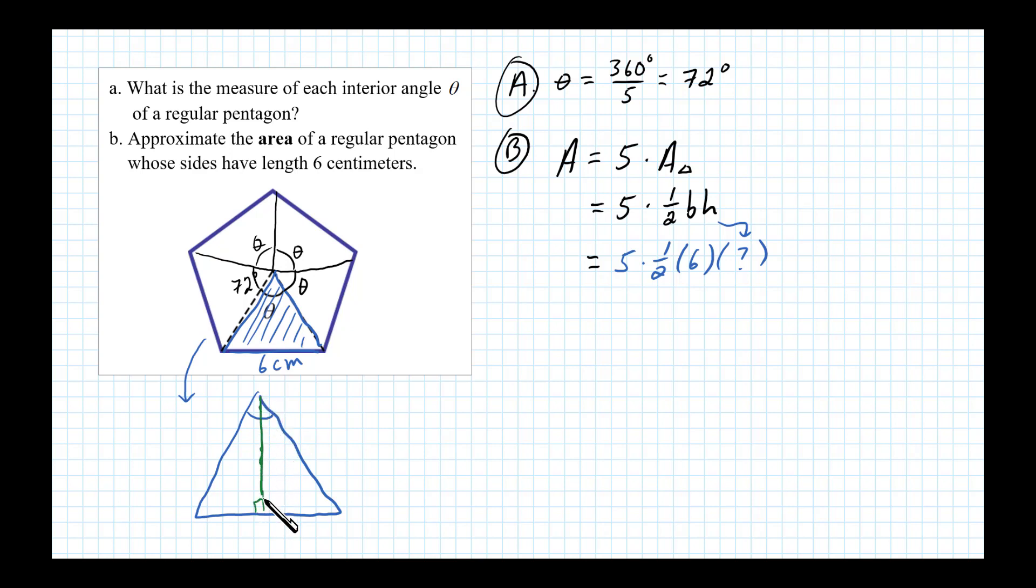We know this angle here is one half of the 72 degrees - one half of 72 degrees is 36 degrees. And we know the base is going to measure three centimeters, and we want the actual height of that triangle there. So it looks like we can use tangent. We can say tangent of 36 degrees...